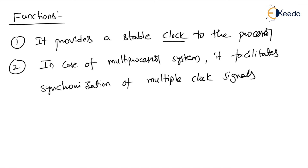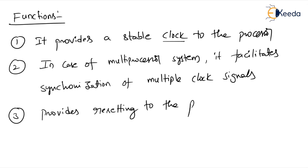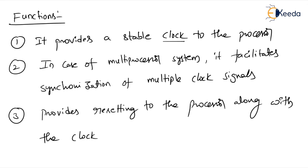Multiprocessor means we are using maximum mode. When using a multiprocessor system, the 8284 provides synchronization between different clock signals. The third function is that it provides resetting to the processor along with the clock signal. Remember these three functions of the 8284.